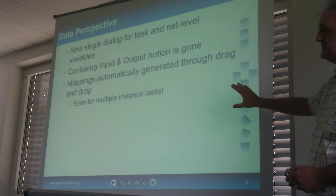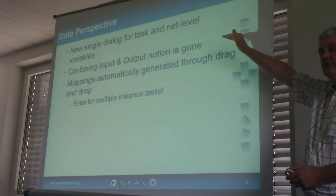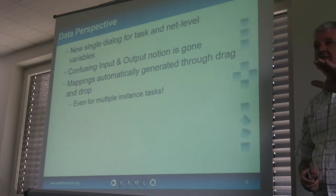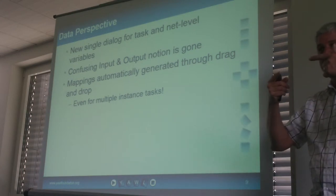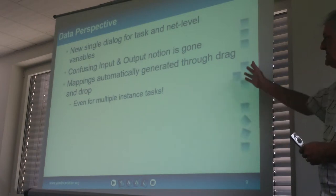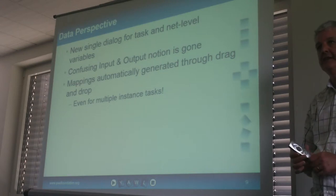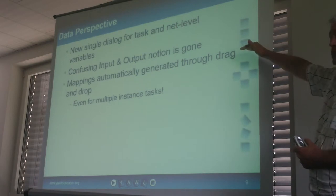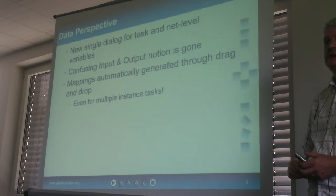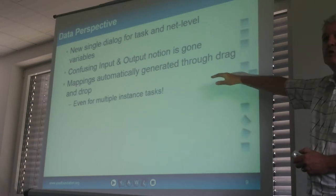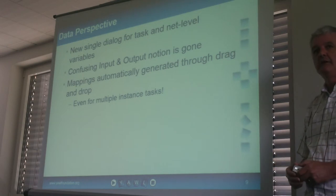In the new editor there's a single dialogue through which you can access the task and the net variable at the same time, removing the input/output concept. From an engine perspective, there are no input and output variables — there are inputs and there are outputs, and if a variable has the same name and data type, that's what's defined as an input/output variable; the concept exists only in the editor. The dialogue supports drag and drop — you drag a net variable to the task variable and it automatically adds the task variable and creates all the necessary mappings. Even for multiple instance tasks: mark a variable as a multiple instance task variable and it will create all the splitter and accessor queries automatically.